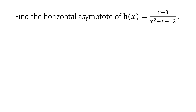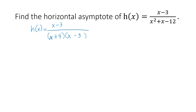First, let us factor out the denominator. h(x) = (x − 3) over a trinomial denominator whose factors are two binomials. Factors of x² are x and x, and factors of negative 12 by trial and error are positive 4 and negative 3. Then (x − 3) divided by (x − 3) is 1, so what's left is h(x) = 1 / (x + 4).